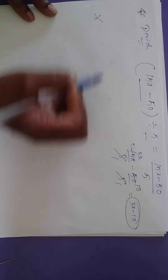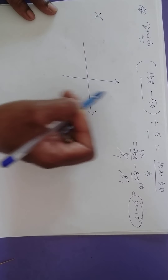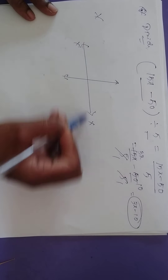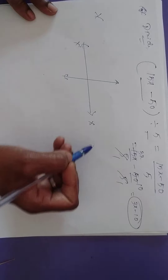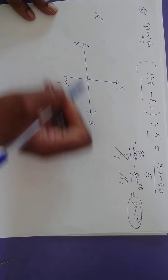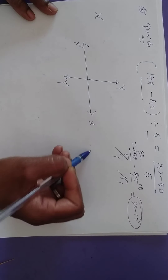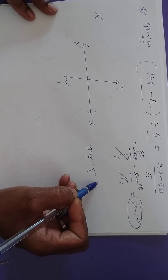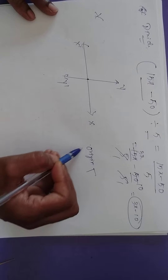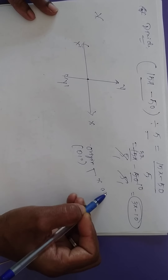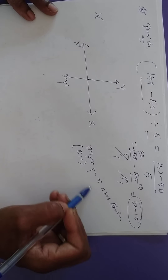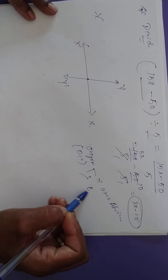When you plot the graph, the vertical line is called the y-axis and the horizontal line is called the x-axis. Both meet at the origin — the coordinates of the origin. The name of the x-axis is abscissa, and the name of the y-axis is ordinate.